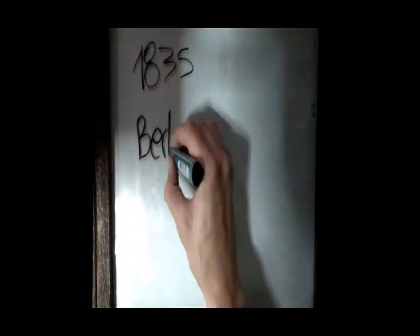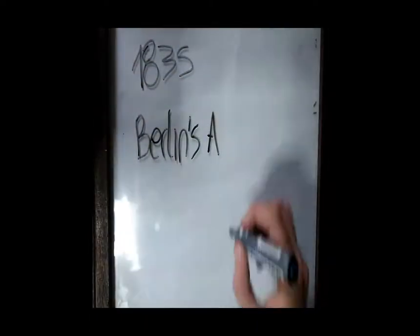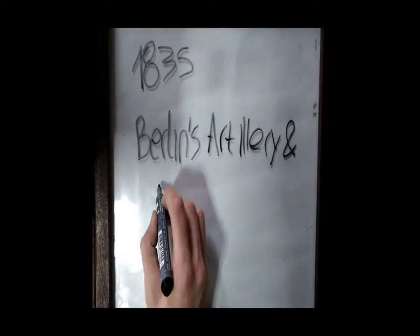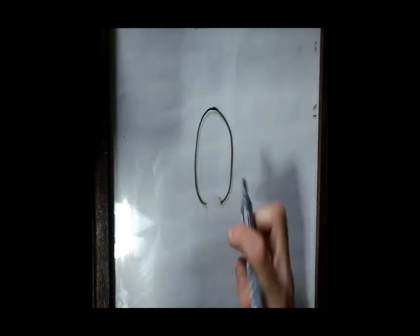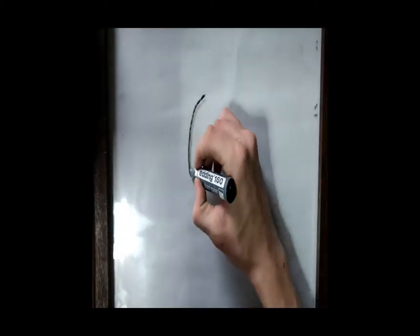But first he must go through grueling military training. Everything proceeds as planned. Werner von Siemens becomes an officer candidate and is sent to the Berlin Artillery and Engineering School in 1835.